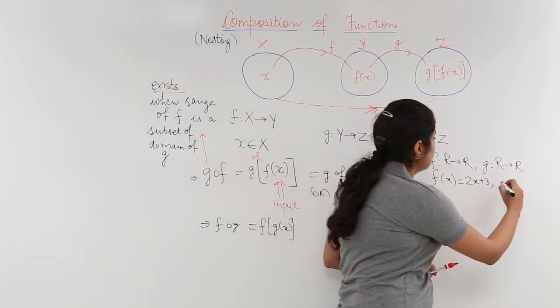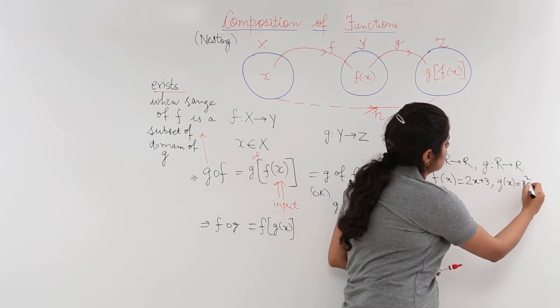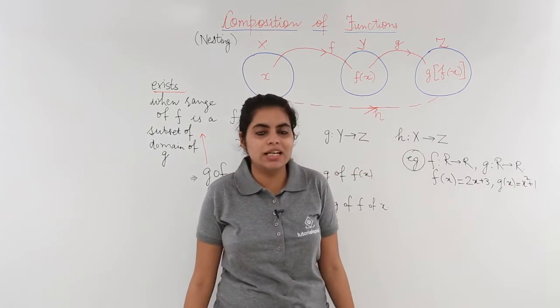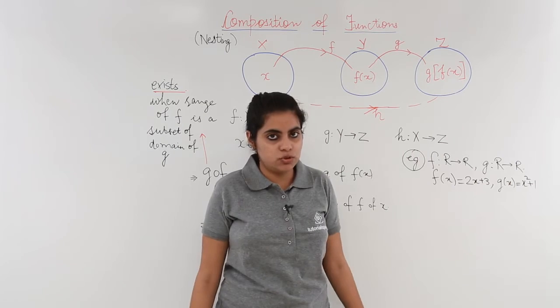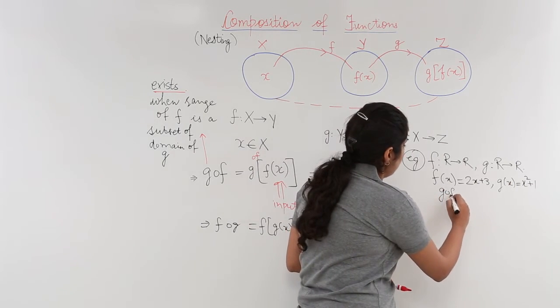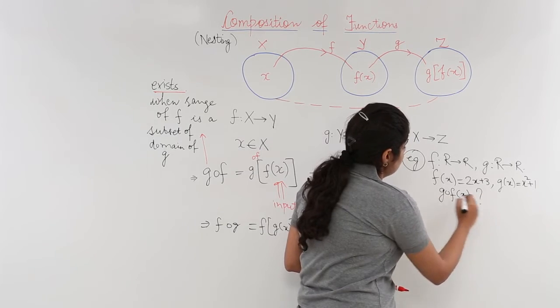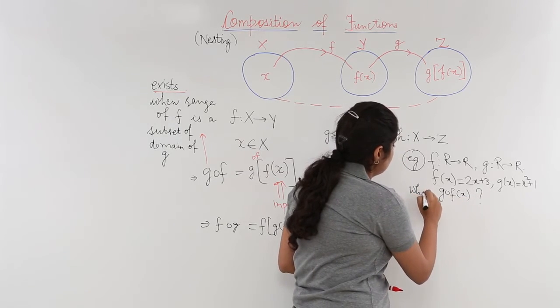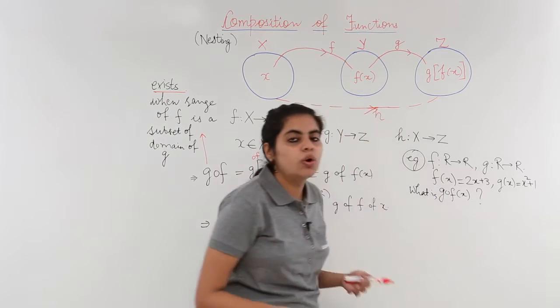Now the function is 2x + 3 which is f(x). The g(x) given to me is x² + 1. These are the f(x) and g(x) given to me and the question wants me to find g∘f(x). This is the question. What is g∘f(x)?